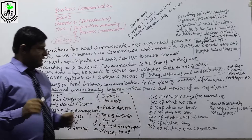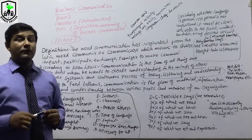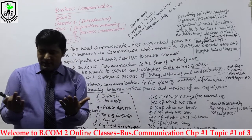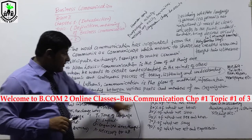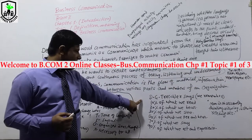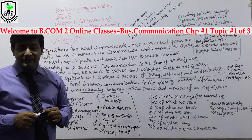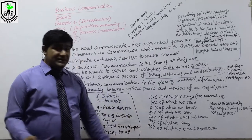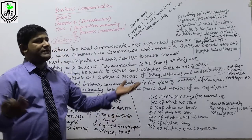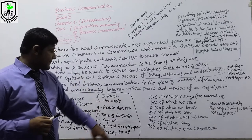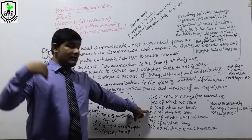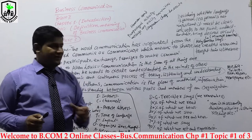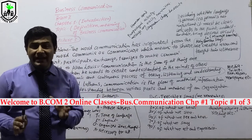DG Trackler says — note one thing in mind — what we remember: 10% of what we read, 20% of what we hear, 30% of what we see. And 50% of what we both see and hear. Combine both — 50% of what we see and hear.